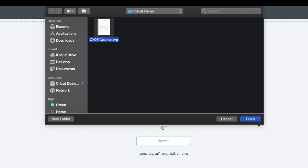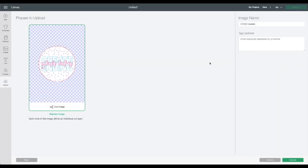Then you're gonna go to the folder in which you saved the CYOE coaster file. Now you'll see here that it's gonna pull up the image. We're gonna check the image name, it does say CYOE coaster which is great, so then you're gonna click upload.